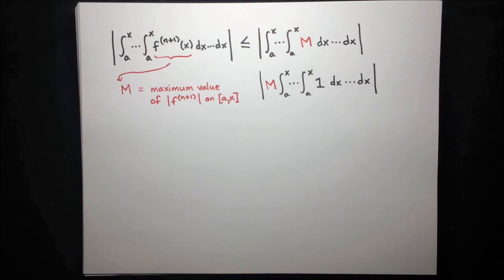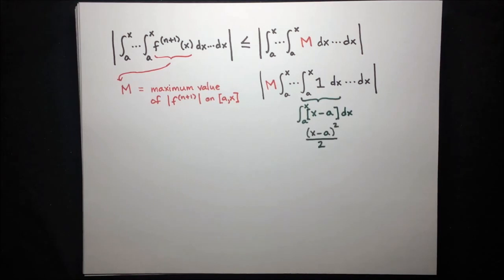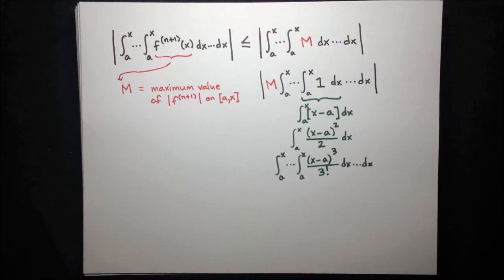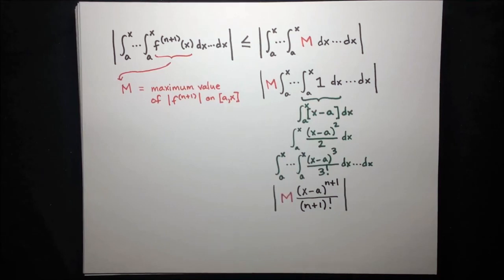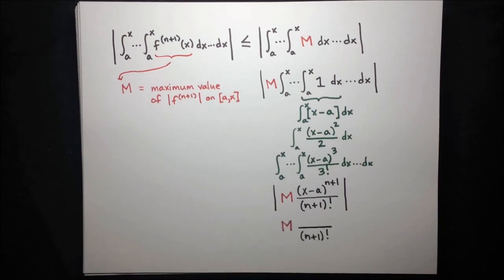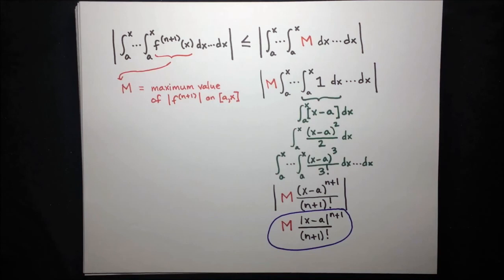If you start evaluating these integrals from the inside out, the result of the first integral is just x minus a. Integrating that again gives x minus a squared over 2. Integrating again gives x minus a cubed over 2 times 3 — and 2 times 3 is the same as 3 factorial. If you keep on integrating all n plus 1 integrals, you get x minus a to the n plus 1 over n plus 1 factorial. Writing in the rest of the expression with M and the absolute value: M and n plus 1 factorial are non-negative, so they come out of the absolute value, leaving only the absolute value of x minus a. And there we have it — this expression is the Lagrange error bound.